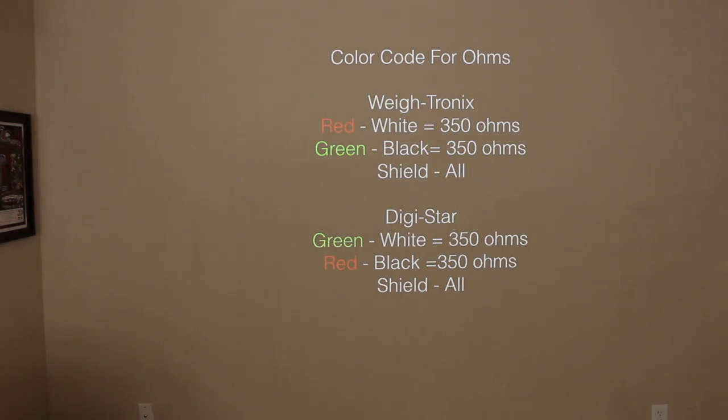The next thing to be aware of is the color code for ohms. Sometimes if you have a Digi-Star or a Weigh-Tronix, you may not have that connector, but you can do the ohms test still by just using the color scheme. So you'd go red to white should be 350 ohms, green to black - and this is Weigh-Tronix - should be 350 ohms, and then shield to all should be open. Then on the Digi-Star weigh bar ending, you would go green to white should be 350 ohms, red to black should be 350 ohms, and then shield to all should be open as well.